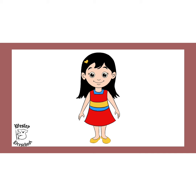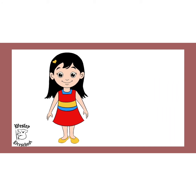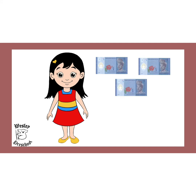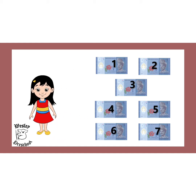Let's meet my friend Sarah. Today is her birthday, so she decided to buy a cake for herself. Her mummy gave her 3 ringgit — 1, 2, 3. Her daddy gave her 4 ringgit — 1, 2, 3, 4. So, how much did she get from her parents in total? Let's count: 1, 2, 3, 4, 5, 6, 7. Yeah, Sarah has 7 ringgit right now.